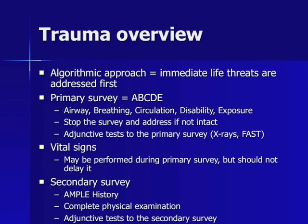The secondary survey is performed after the primary survey and vital signs, and includes the AMPLE history, which stands for allergies, medications, past medical history, last meal, and events immediately prior to the trauma. The secondary survey also includes the complete physical examination and any adjunctive testing.